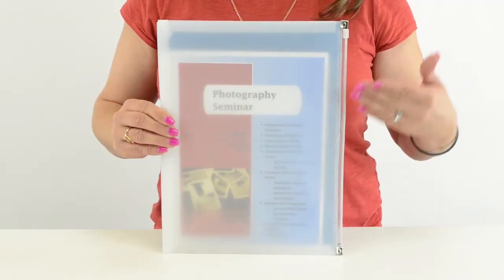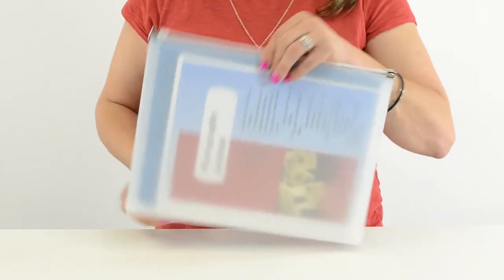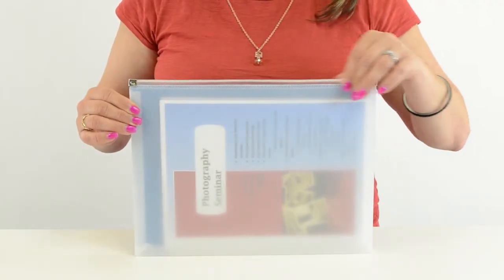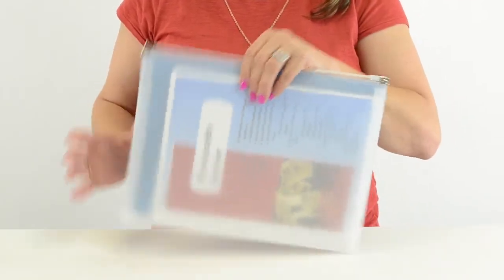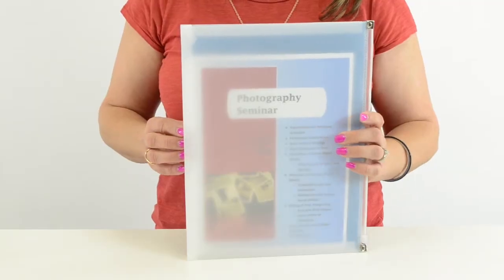The envelopes load from the long side, and the easy zip closure keeps your document safe and secure. Each envelope stores up to 200 8.5 x 11 sheets.